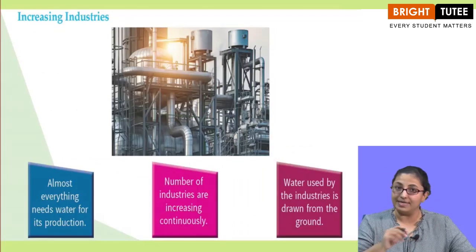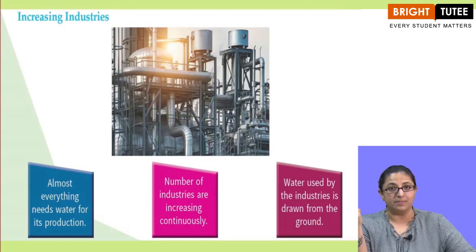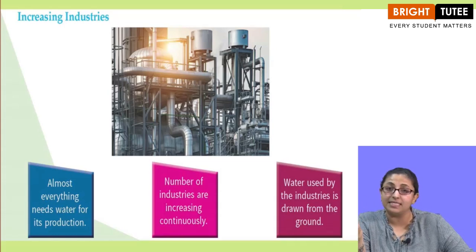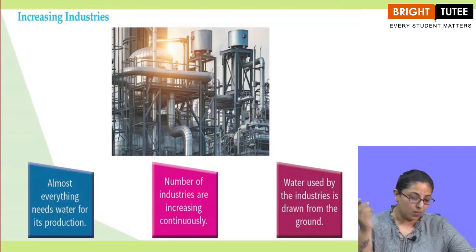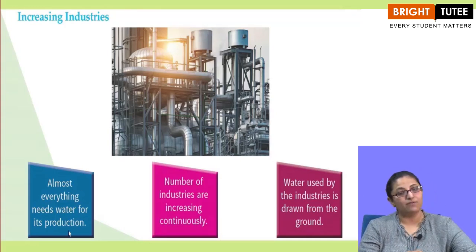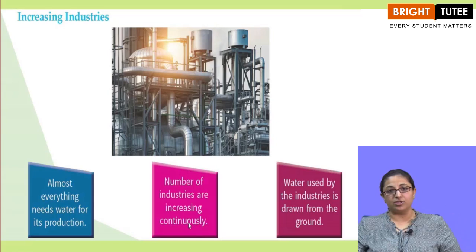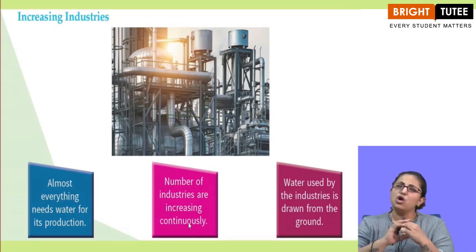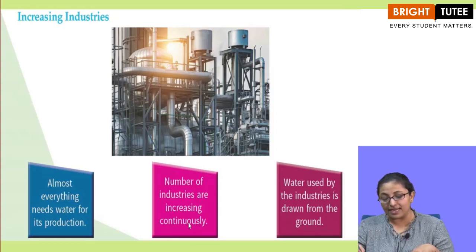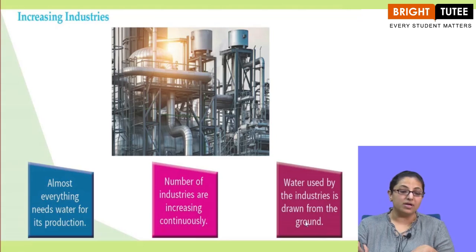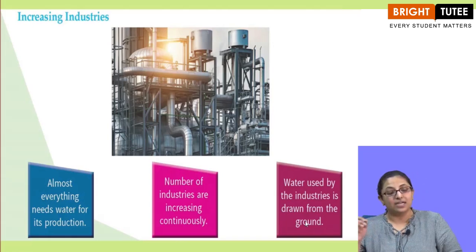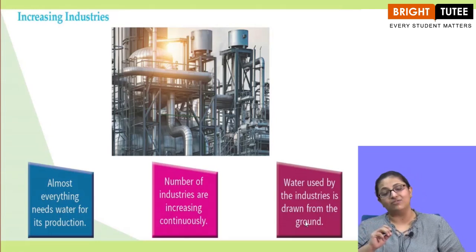The second factor is increasing industries. Most manufacturing and industrial activities need water. Number of industries is increasing continuously, and all industries draw water from the ground for production. That is how the water table depletes, especially at places where there are many factories.